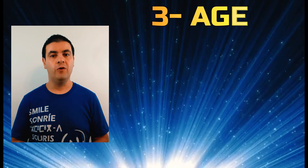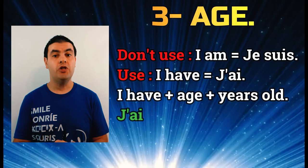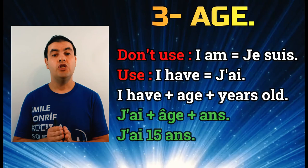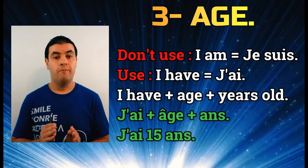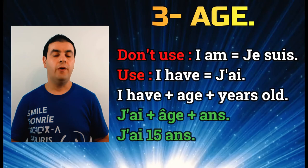In the third part we will learn how to say how old you are. Be careful — it's not like English. You do not say 'I am 20 years old.' In French, 'I am' is 'je suis' and 'I have' is 'j'ai.' So you do not say 'je suis 15 ans' but you say 'j'ai 15 ans.' In French you use 'to have,' not 'to be,' to say your age.